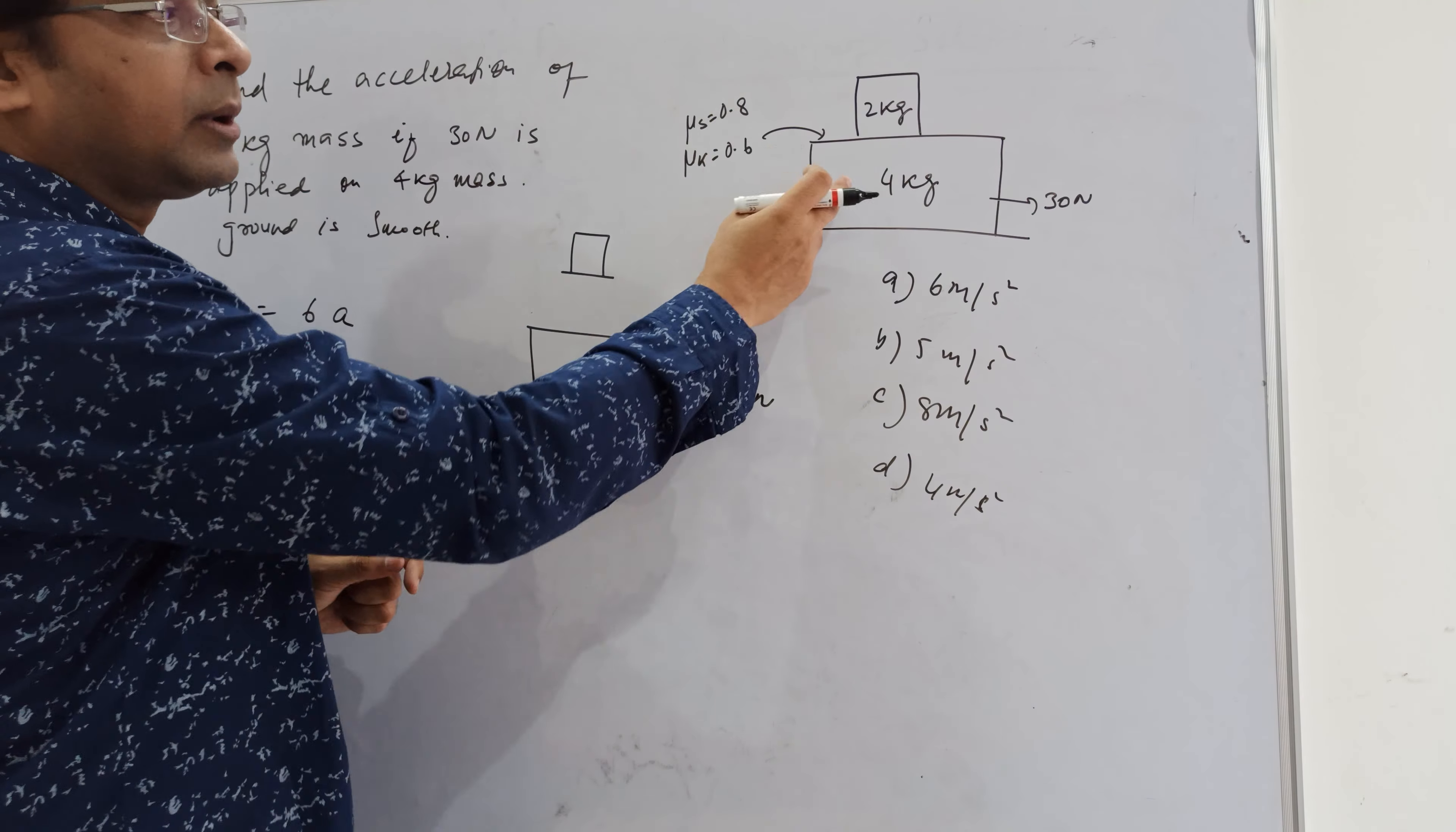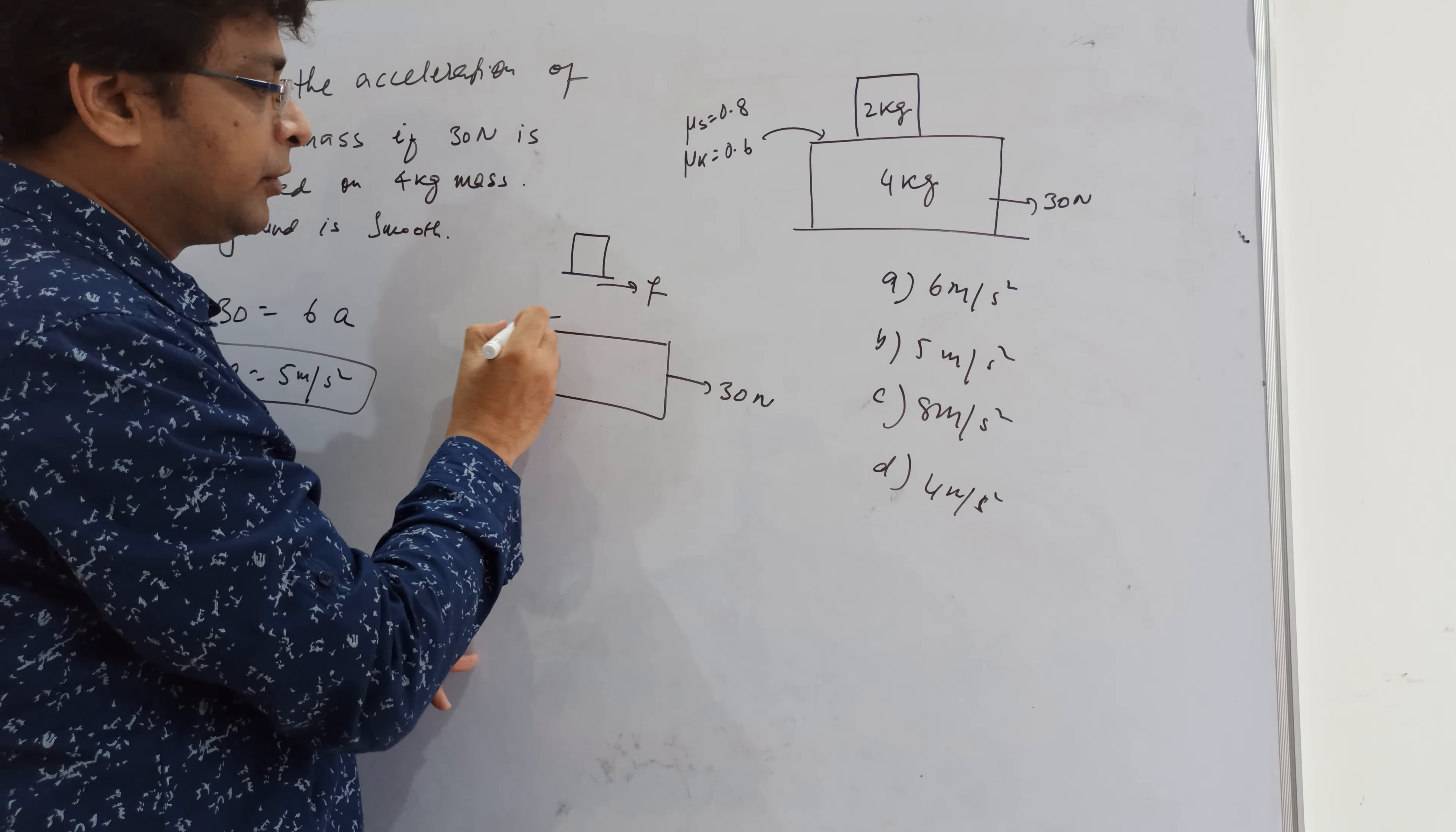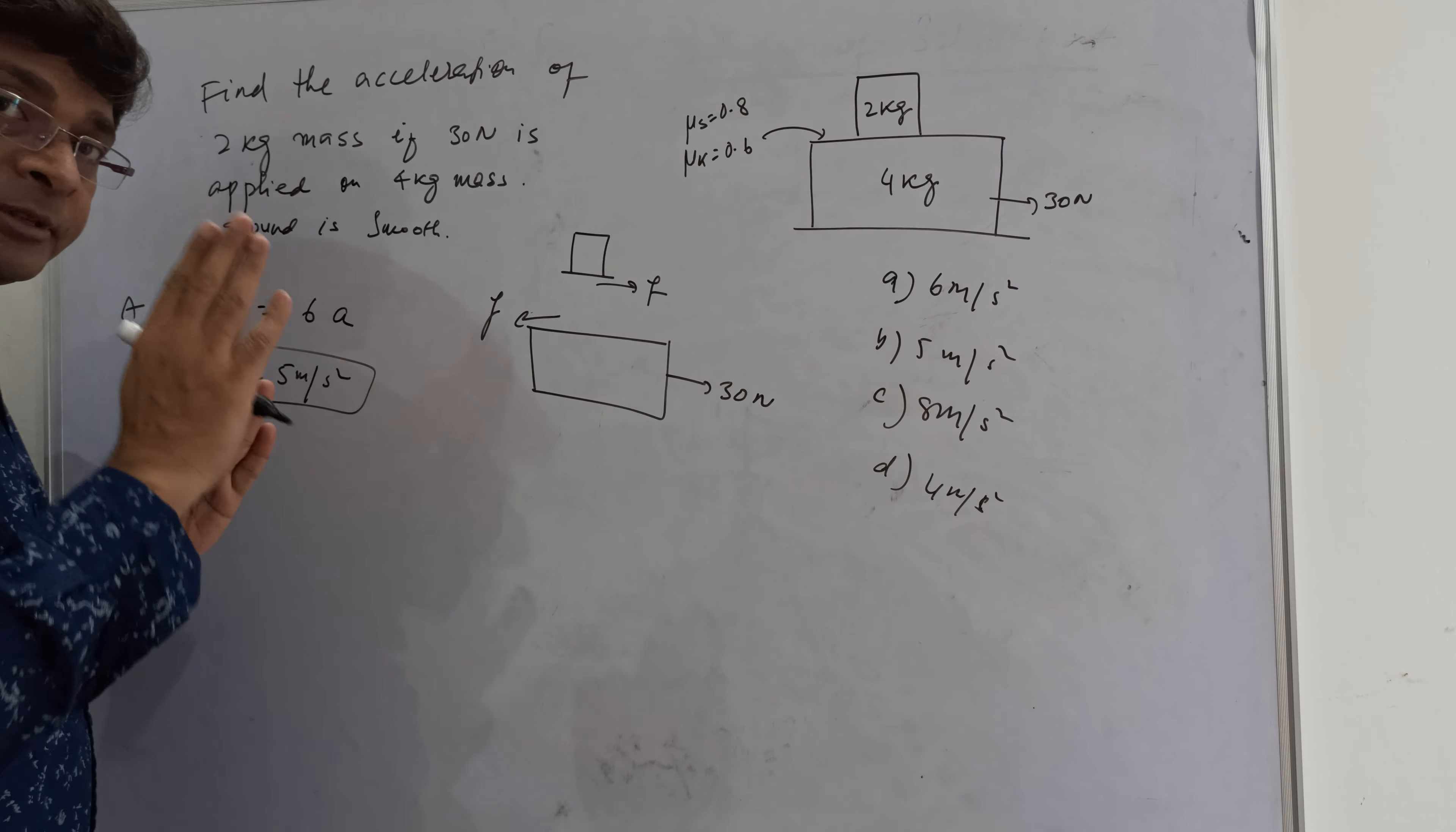For the 2 kg block, force is acting on one side, then friction is responsible. If we show friction on the other side, then friction will act back since two bodies are in contact here.